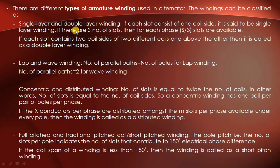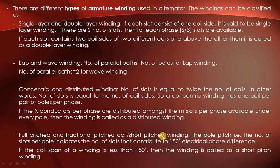In the last lecture we discussed the types of armature winding. There are four types of armature winding in an alternator: first, single layer and double layer winding; second, lap and wave winding; third, concentric and distributed winding; fourth, full-pitched and short-pitched winding. We have already discussed these types in the last lecture.